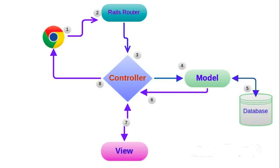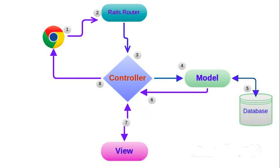Now you can see the browser here — the browser can be thought of as a client. Whenever you make a request from the client, the request first comes to the web server, and the server loads the router, where the router identifies which controller in your application will serve this request and which action of that controller is responsible. Once the request comes to the controller, the controller decides whether to go to the model or not. The model performs the desired CRUD operation using the database, then sends the response back to the controller, and the controller sends that response to the view, which renders or redirects the response on the browser.